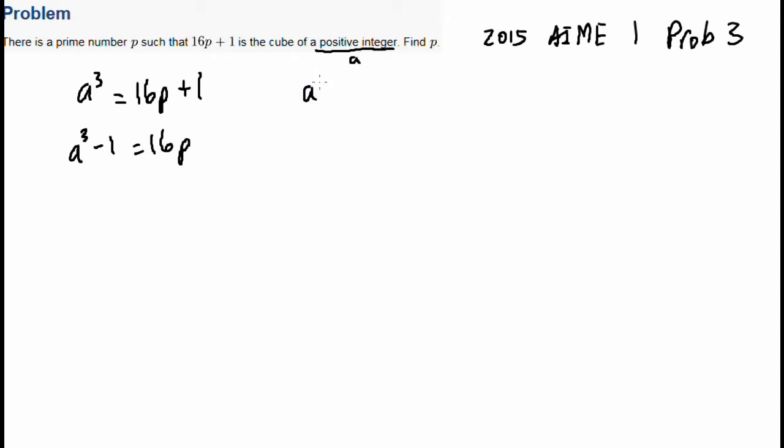So actually the factorization is this. If you have subtraction of cubes, this factorization will work. a minus b, a squared plus ab plus b squared. So this is always true, this is a nice little factorization that you can use during math competitions. And of course you can use it here because 1 is a cube of itself. So that would be a minus 1, a squared plus a plus 1, equals 16p.